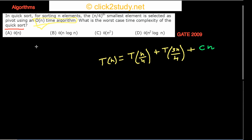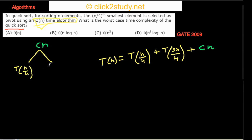In the recursion tree, you start at T(n). T(n) is cn plus the smaller subproblems. So at the next step, instead of T(n) I write cn at the root, then go one level down the tree — on one branch I have T(n/4) and on the other branch I have T(3n/4).